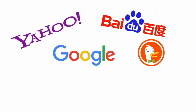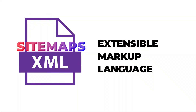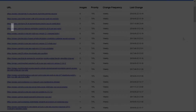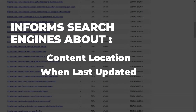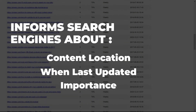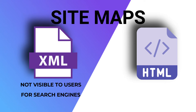Sitemaps help search engines to crawl and index your website for search engine optimization. XML (extensible markup language) files contain a list of the essential pages on your website, and they tell Google, Bing, and other search engines where your content's located, when a page was last updated, and the importance of specific pages on your site. But don't confuse XML sitemaps with HTML sitemaps — XML sitemaps aren't visible to your users and they're for the search engines, whereas HTML sitemaps are for your users and help them navigate through your site.